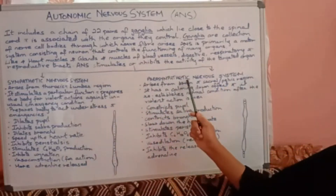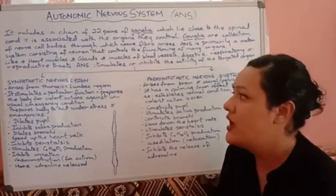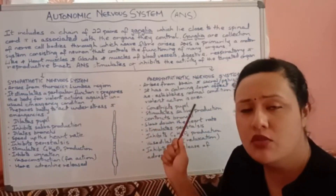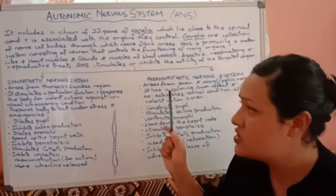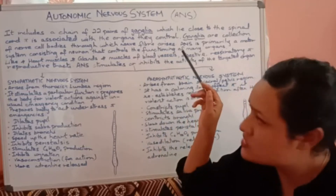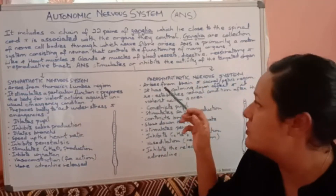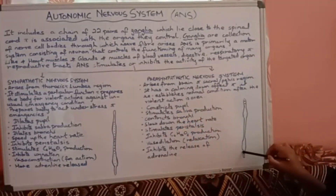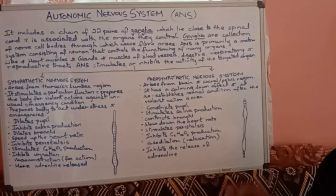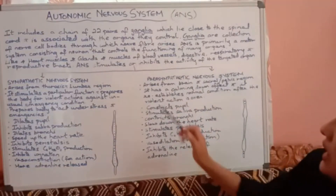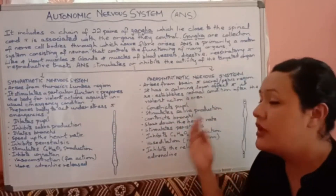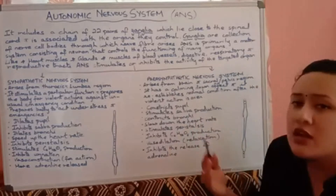The parasympathetic nervous system is the opposite of the sympathetic nervous system. It has a calming-down effect and stops activity. It arises from the brain and the sacral or pelvic region. It re-establishes the normal condition of a person.